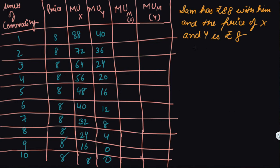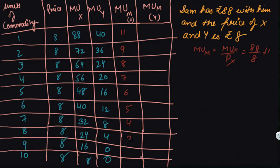First, we calculate the marginal utility of money (MU_m) for good X, which is MU_x divided by price of X. For the first unit, MU_x is 88 and price of X is 8, so MU_m equals 11. Continuing this way, the MU_m values for X are: 11, 9, 8, 7, 6, 5, 4, 3, 2, 1.